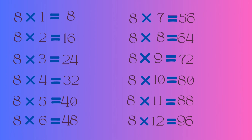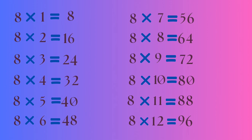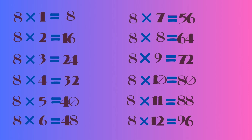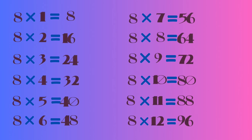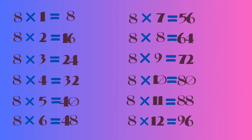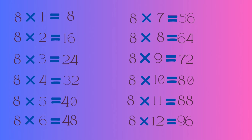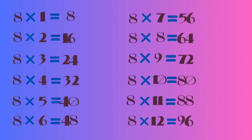8 fives are 40, 8 sevens are 56, 8 eights are 64, 8 nines are 72, 8 tens are 80, 8 elevens are 88, 8 twelves are 96. Let's do it again!